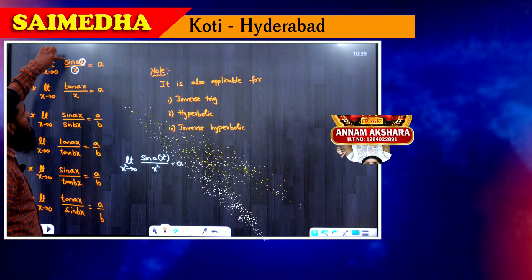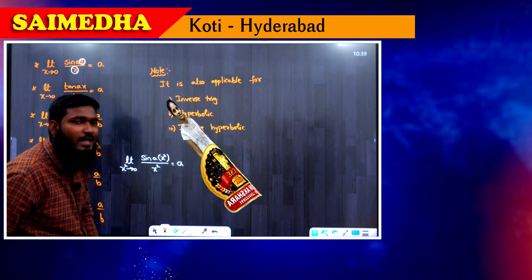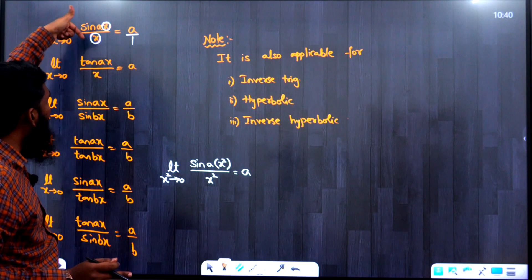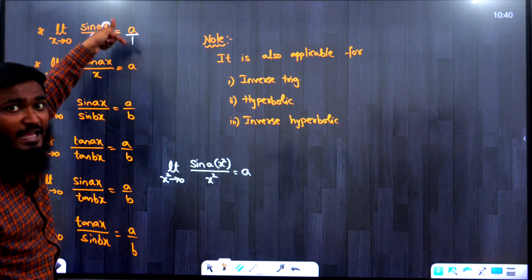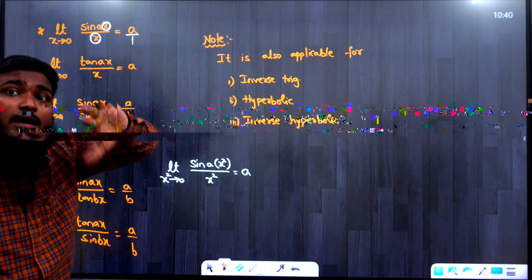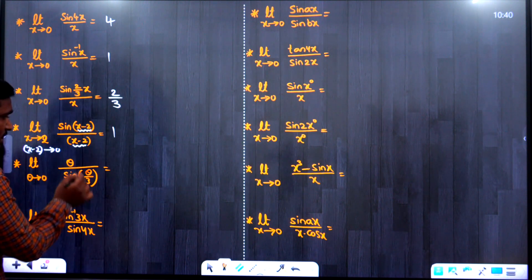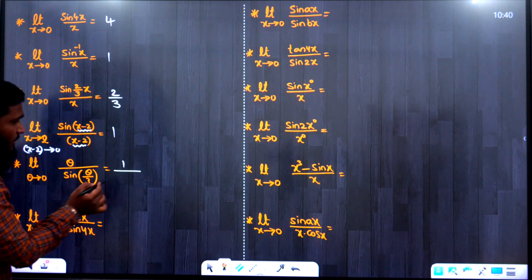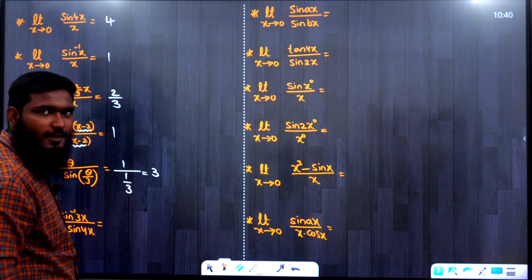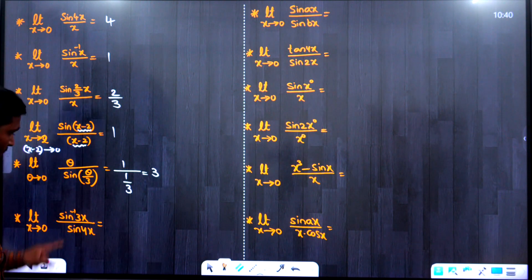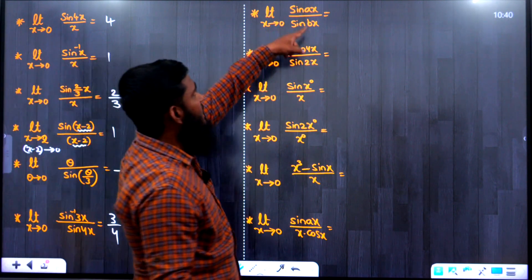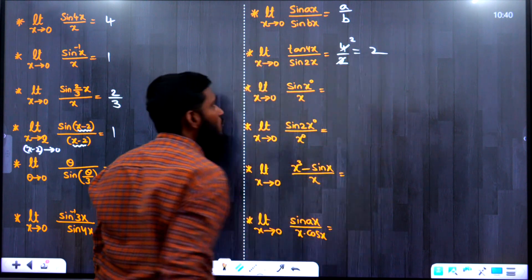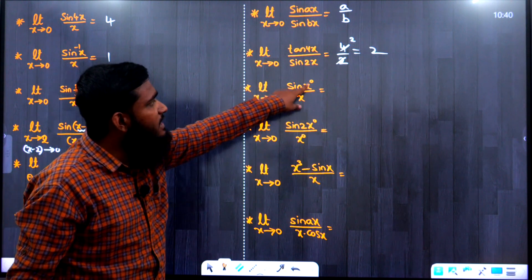For the reciprocal case, sin(ax)/x = a, so x/sin(ax) = 1/a. Continuing: lim x→0, sin⁻¹(3x)/sin(4x) = 3/4; sin(ax)/sin(bx) = a/b; tan(4x)/sin(2x) = 4/2 = 2.